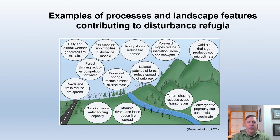Disturbance refugia are areas more likely to persist through disturbances like fire, drought, storms, or insect outbreaks, or more likely to recover from them. Since climate change is likely to increase the frequency and magnitude of many types of disturbances, identifying disturbance refugia is essential to maintain local species and ecosystems.